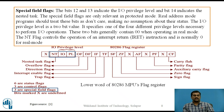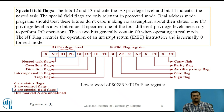Along with status and control flags there are 3 special field flags. Bits 12 and 13 indicate the IO privilege level and bit 14 indicates the nested task. The special field flags are only relevant in protected mode; real address mode programs should treat these bits as don't care. The IO privilege level is a 2-bit value specifying one of 4 different privilege levels necessary to perform IO operations, and generally contains 00 when operating in real mode. The nested task flag controls the operation of an interrupt return instruction and is normally 0 for real mode.